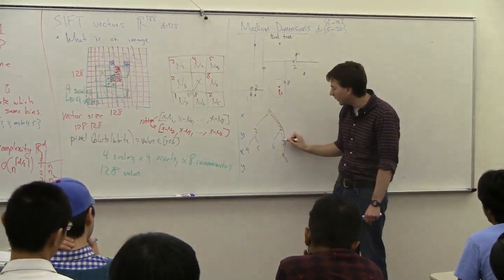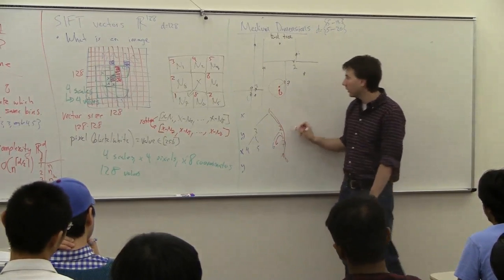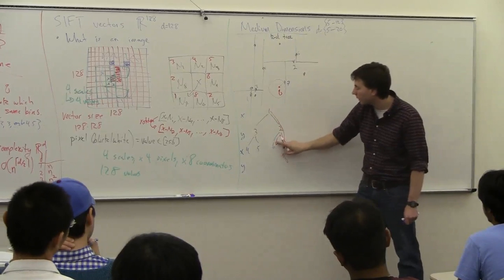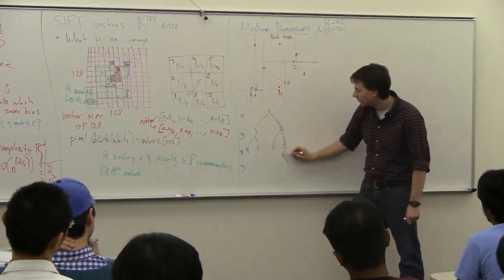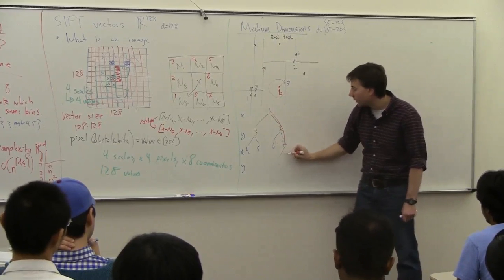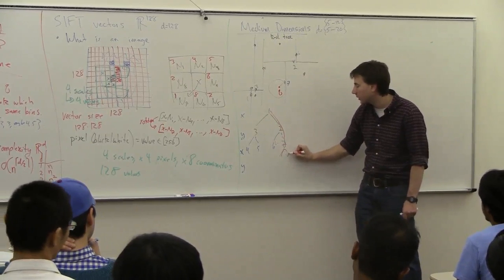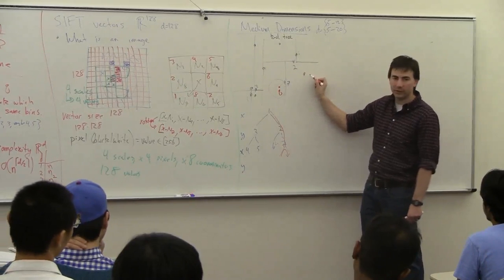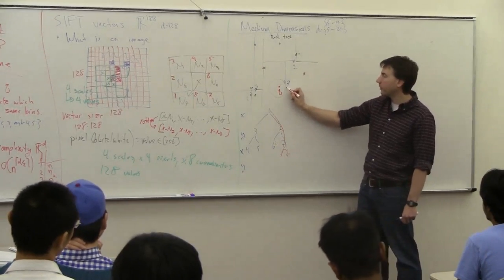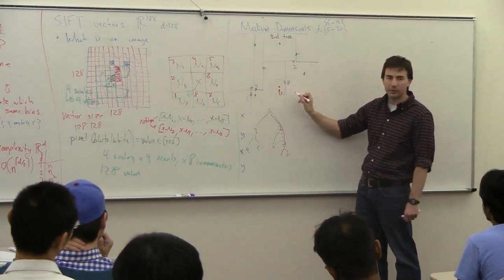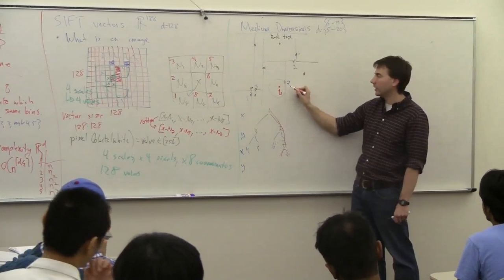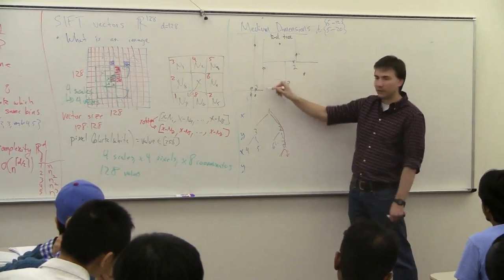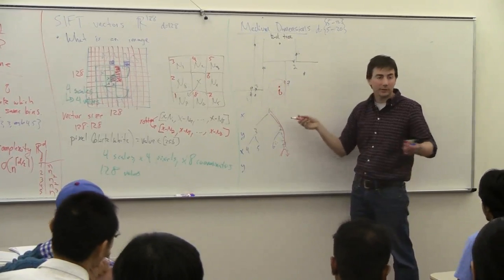I need to check cell six. I go up and check that cell, find the closest point to Q there. If there's nothing closer, then seven was the closest point and I know no other cell contains any point closer than seven. I can stop.